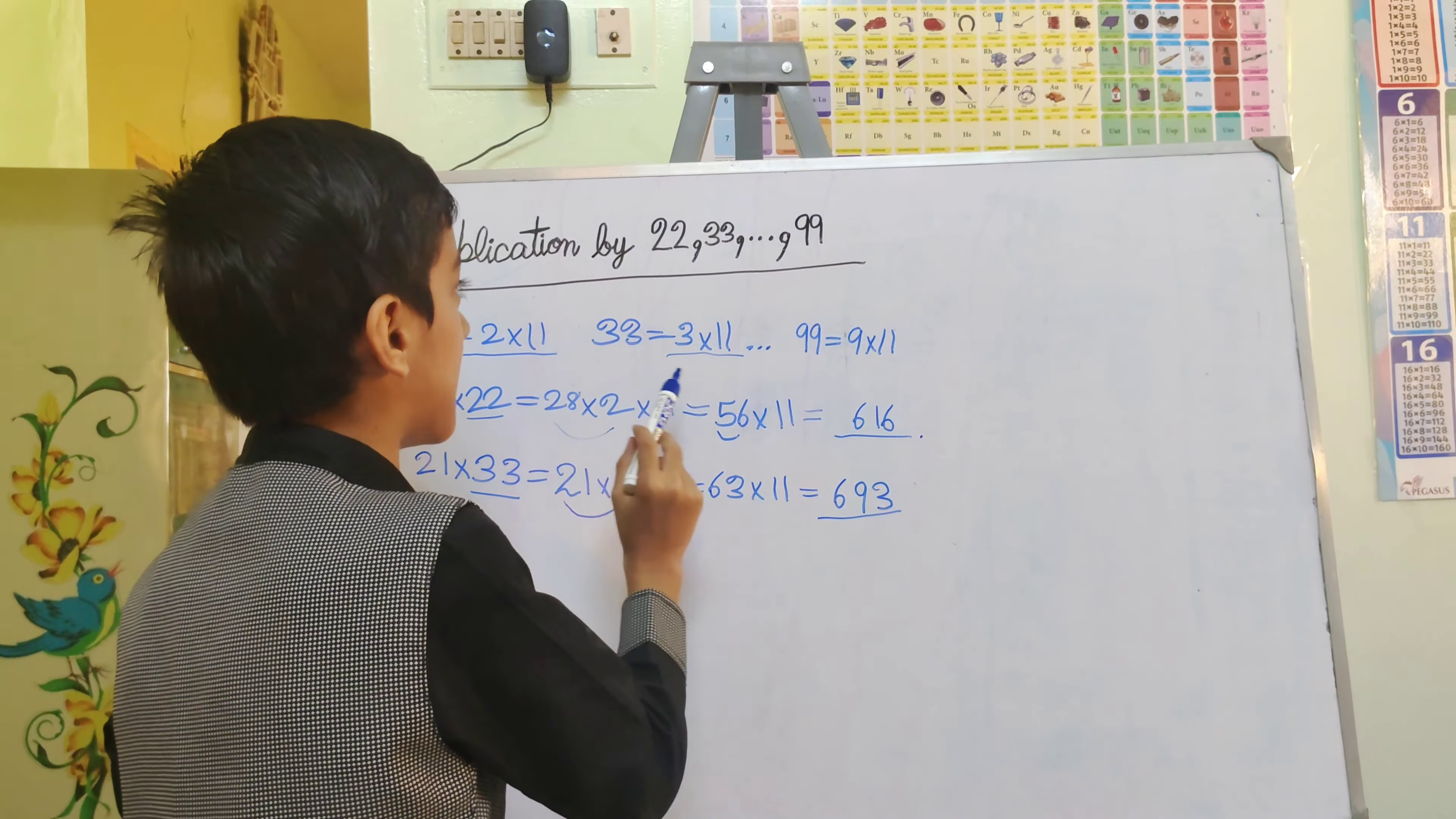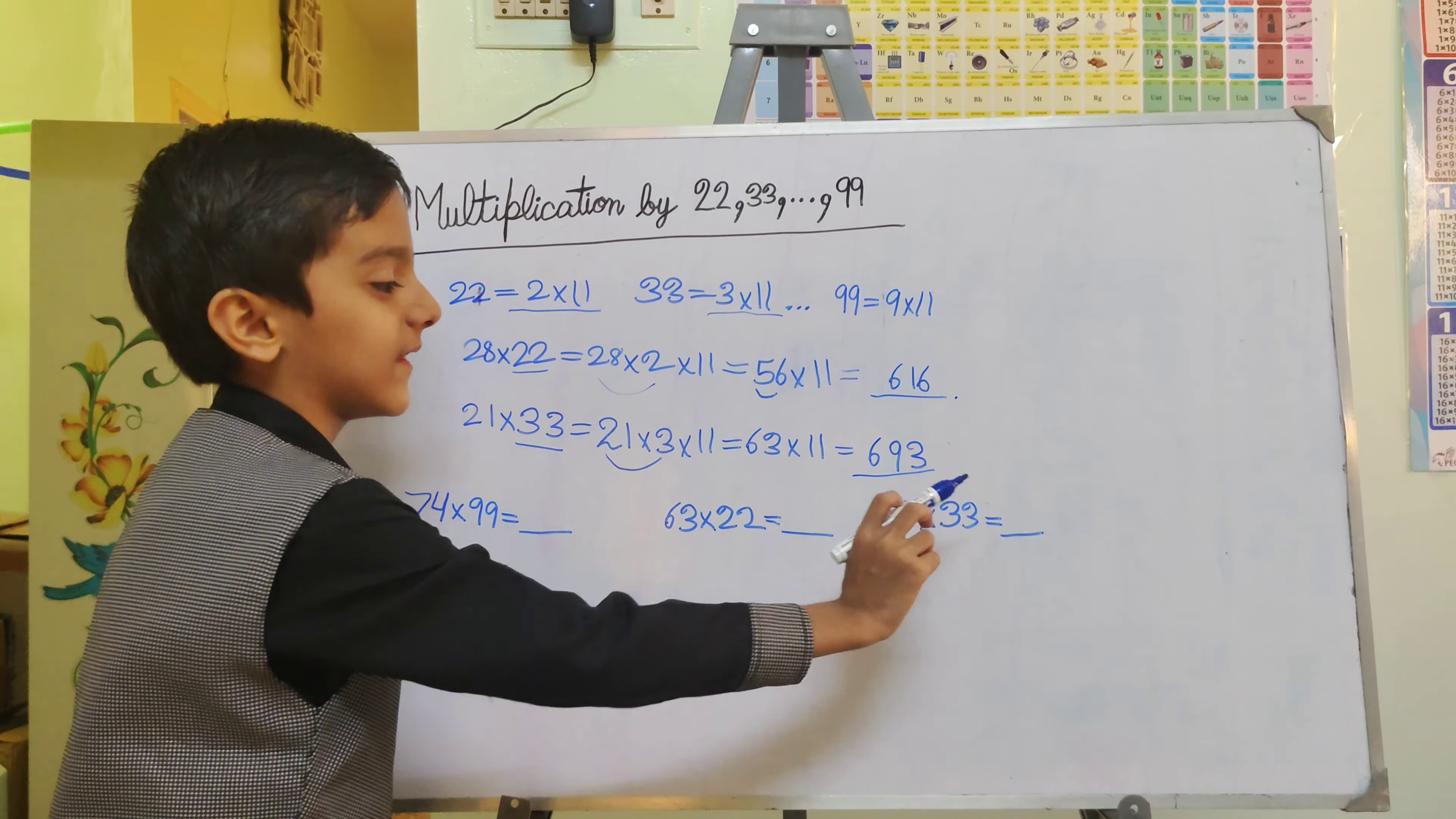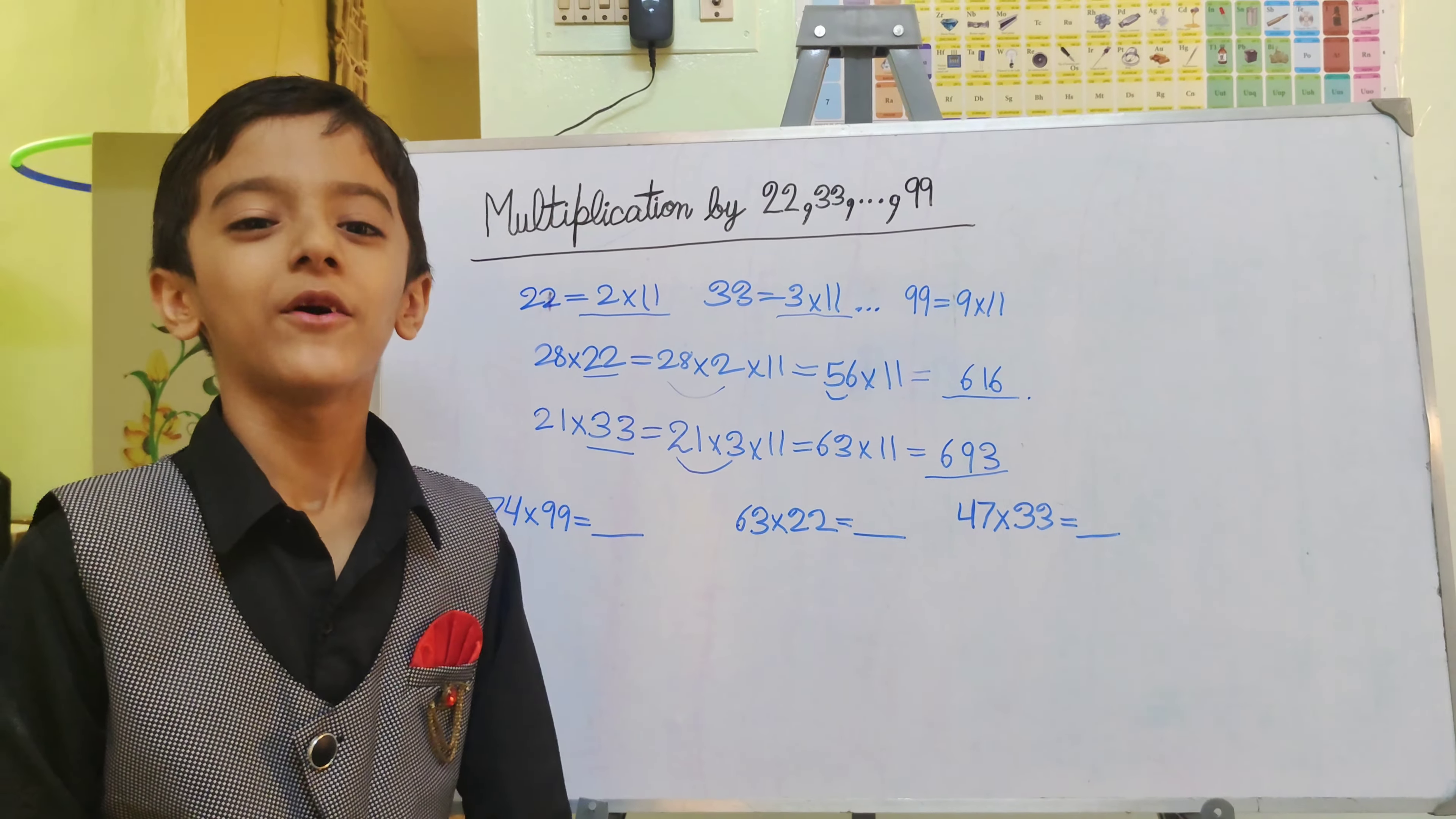This is how we can multiply any number by 22, 33 and so on, 99. Now, tell me these questions and answers in the comments. That's all for this video. Thank you for watching.